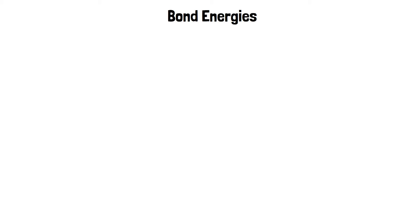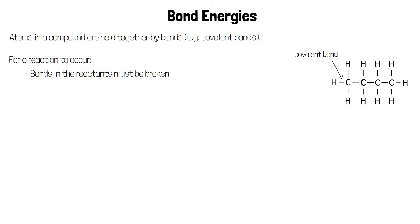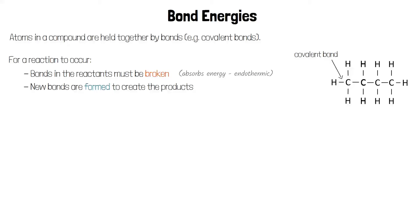Let's recap what bond energies actually are. The atoms in a compound are held together by bonds. The diagram here shows the covalent bonds holding together the atoms in a molecule of butane. For butane to react, bonds in the reactants must be broken — this process absorbs energy, so it's an endothermic process. The atoms must then be rearranged, and new bonds are formed to create the products.